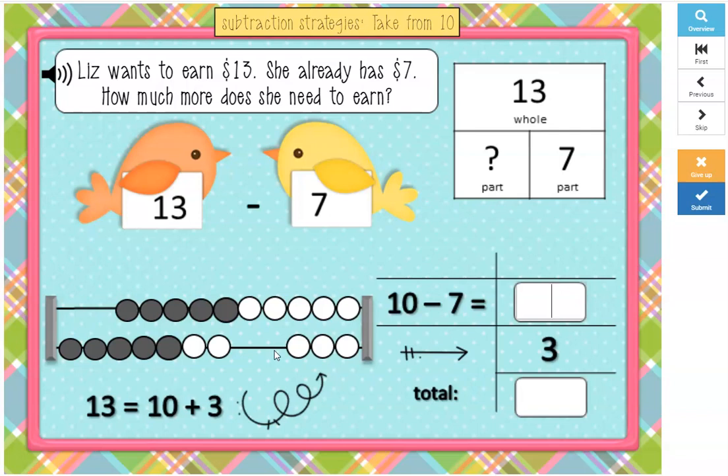So here our whole amount is 13. That's made up of 10 and 3 more. And we want to take away 7. Okay, there's a lot of ways to do this. But with these Boom Cards, we're focusing on one particular strategy. Since we can't take 7 away from these 3,